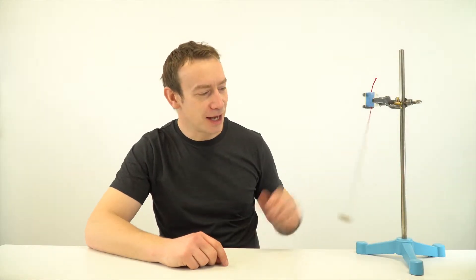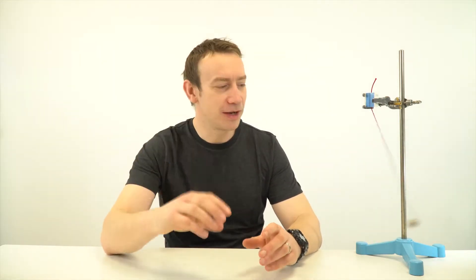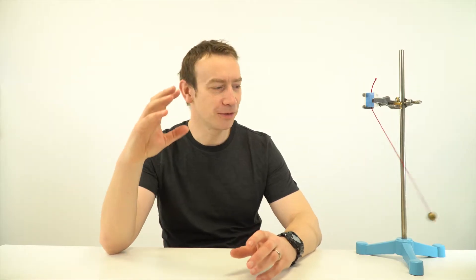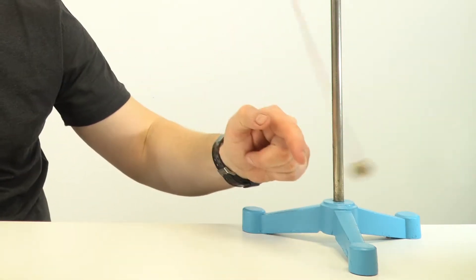So I have a simple pendulum here and as it's swinging backwards and forwards we get this continual transfer of energy from the gravitational potential store when it's at the very highest point to the kinetic energy store when it's at the very lowest point.